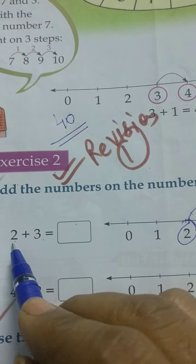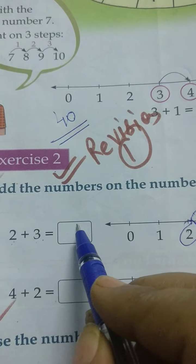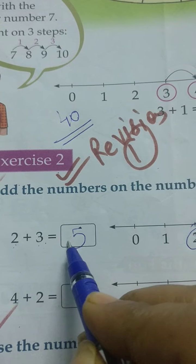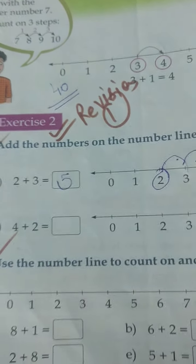Now circle this and write in the box: 2 plus 3. After 3 steps from 2, we reached 5. Good. Write this in the box as well.